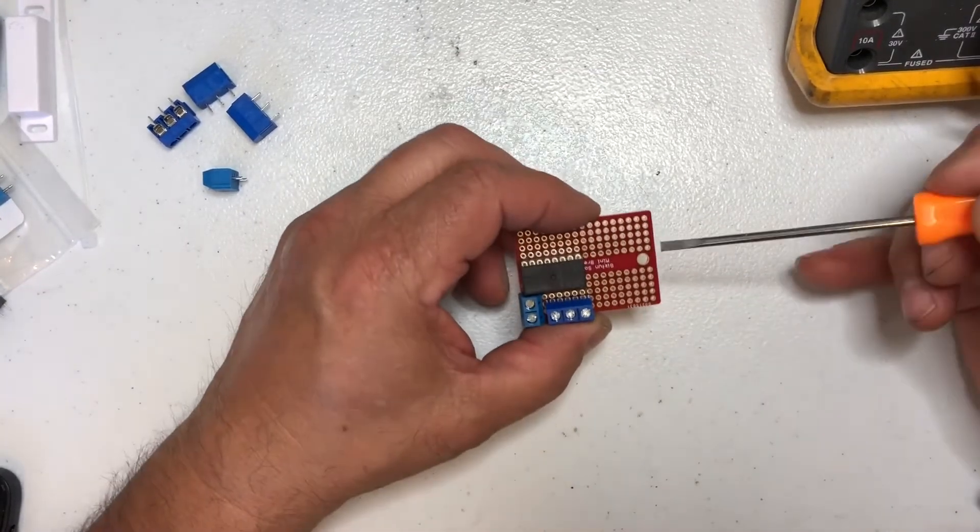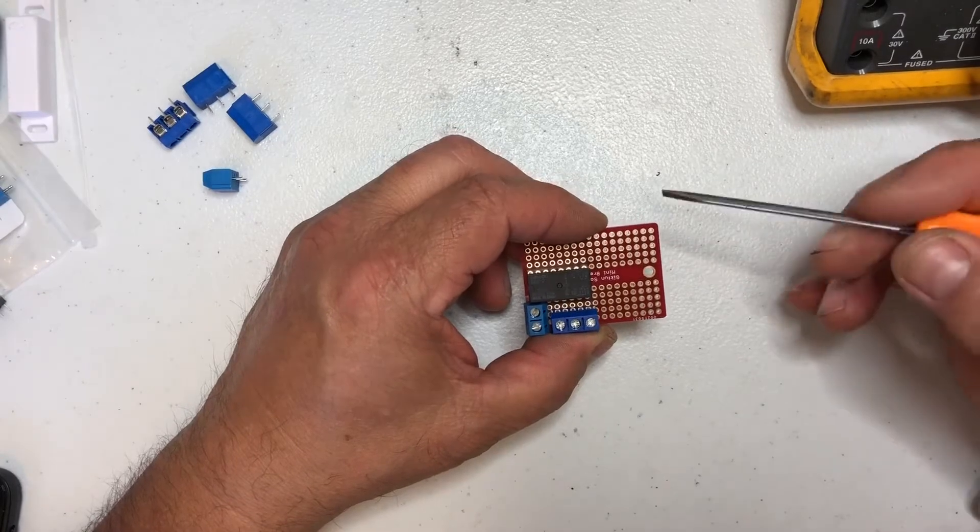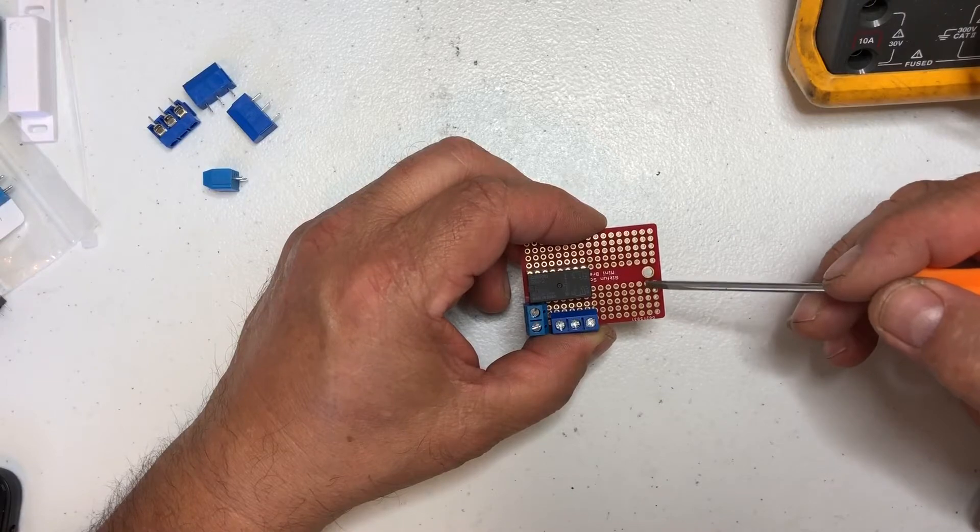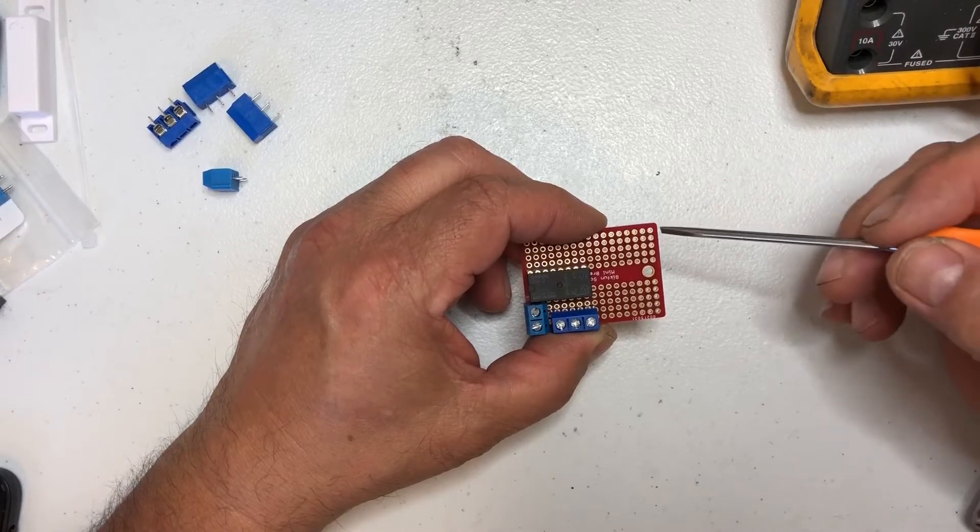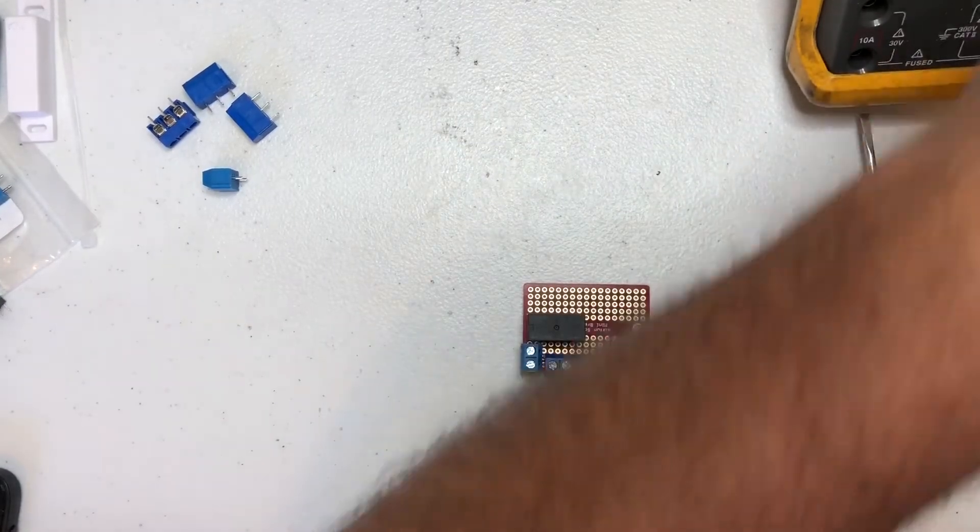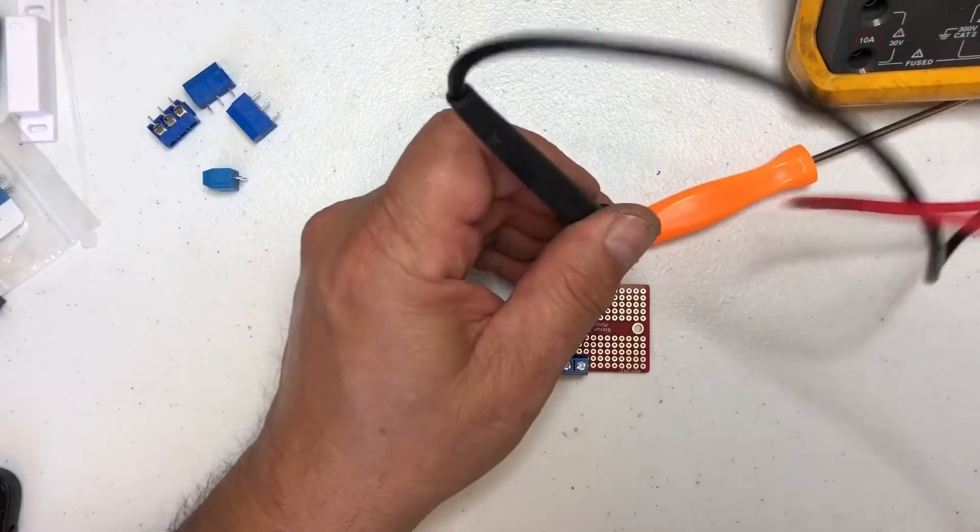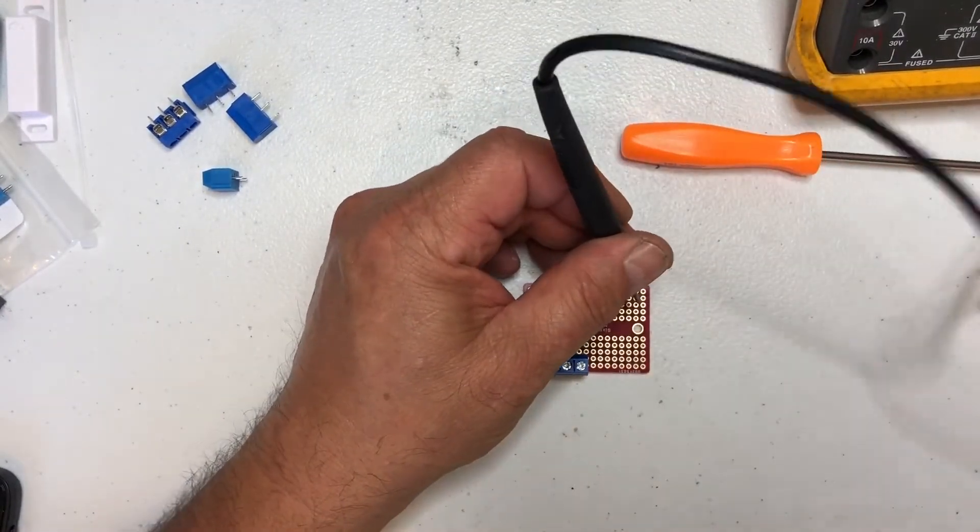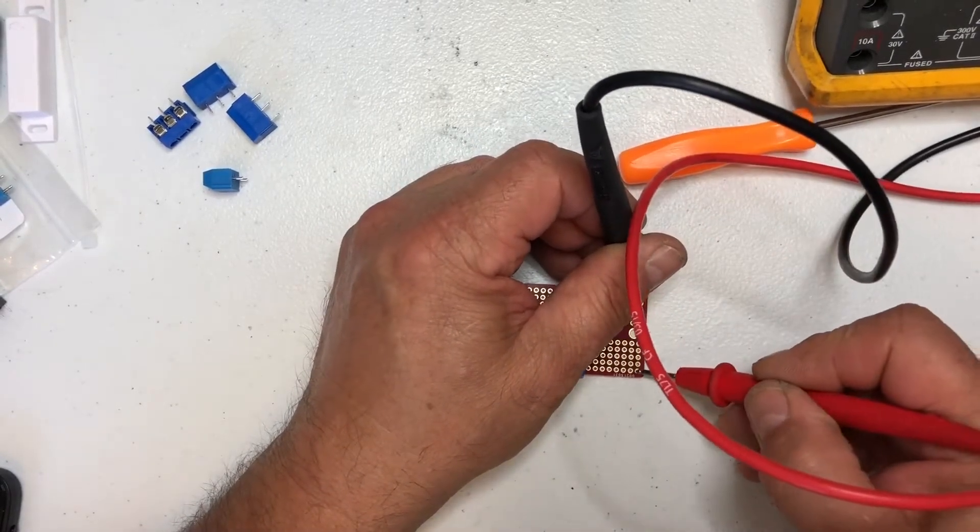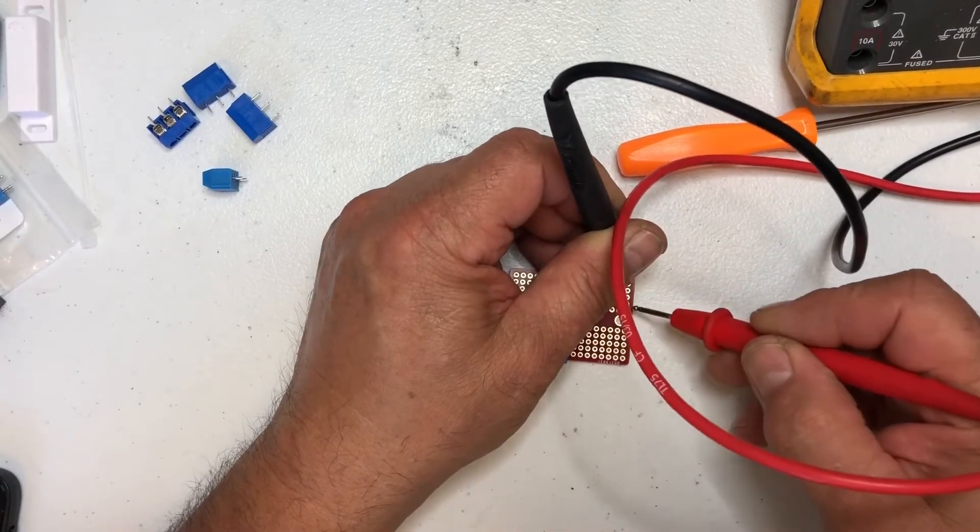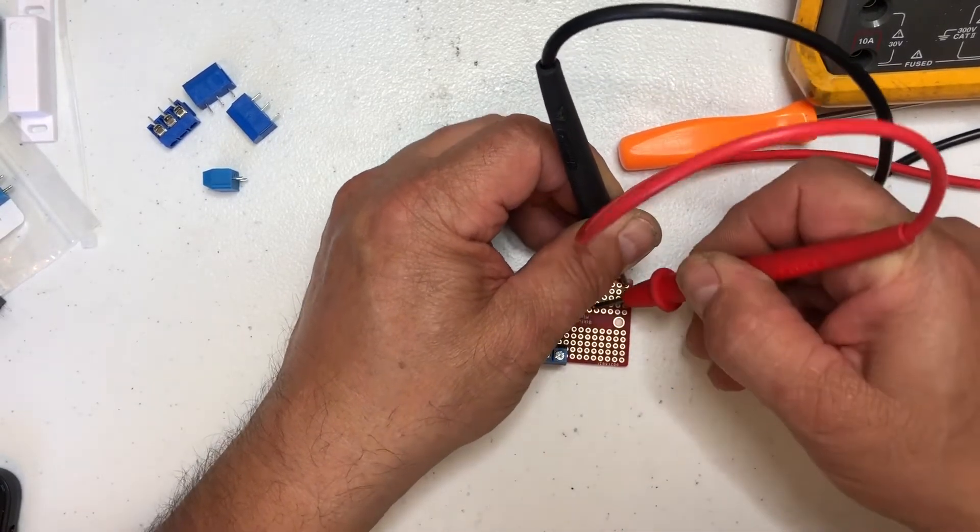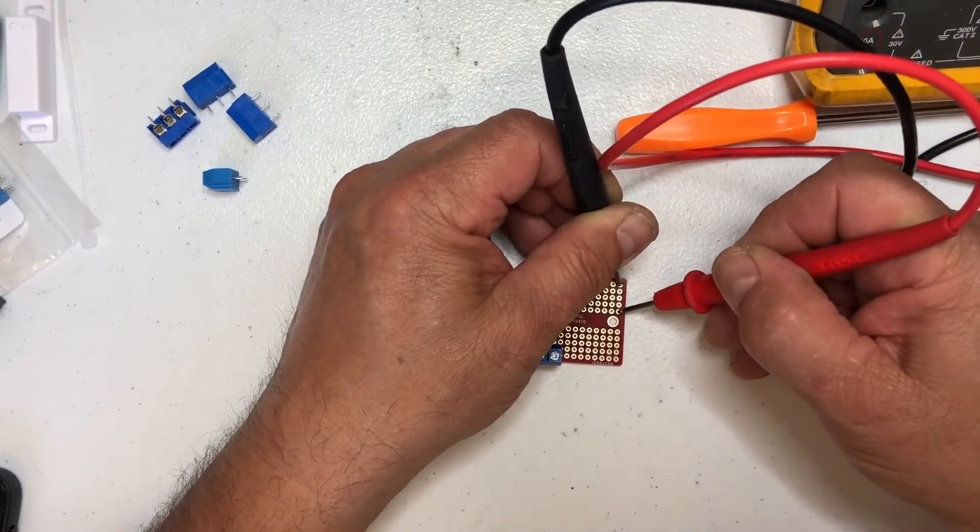So these rows are all connected. This row here is not connected to here, just across here. You can see that this side here doesn't tone across here and then nothing else is going to tone across here, just across these.